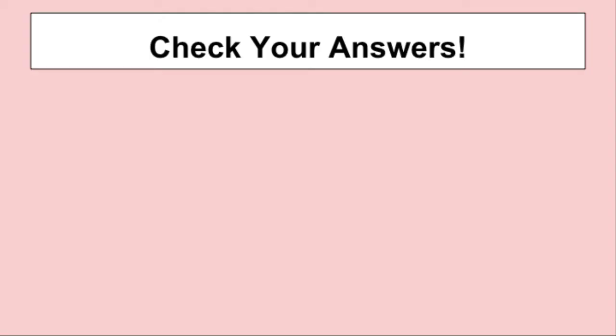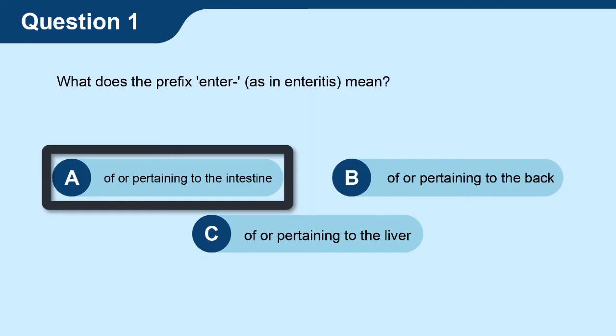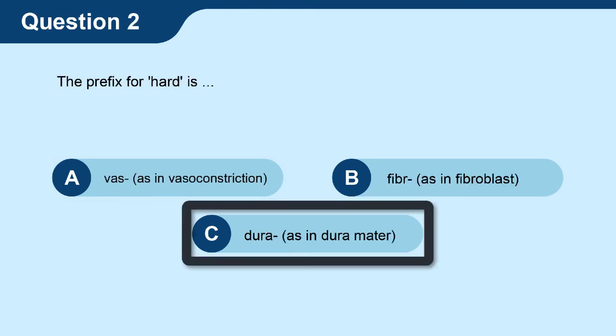Now it's time to check your answers and see how many you were able to get correct. Question 1, what does the prefix enter as in enteritis mean? The answer is A, of or pertaining to the intestine. Question 2, the prefix for hard is C, dura as in dura mater. Question 3, the prefix dors as in dorsal means B, of or pertaining to the back.